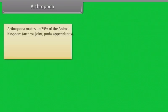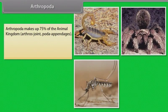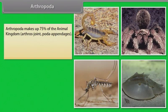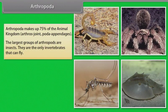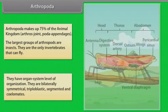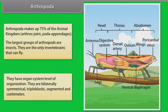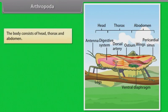Arthropoda makes up 75% of the animal kingdom. 'Arthros' means joint and 'poda' means appendages. The largest group of arthropods is insects — they are the only invertebrates that can fly. Arthropods have organ system level of organization. They are bilaterally symmetrical, triploblastic, segmented and coelomate. The body consists of head, thorax and abdomen.